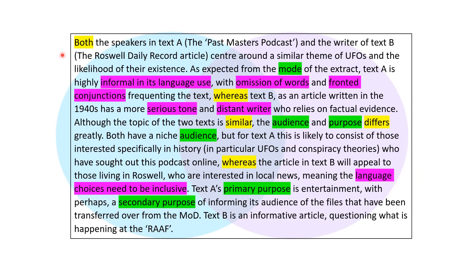So here we have my introduction, and what I've highlighted in yellow is anywhere where I've compared the two texts, in green is where I've discussed my MAPS — mode, audience, purpose or subject — and in purple anywhere I've used subject terminology. These three things link back to the different things we know the exam boards look for in an answer.